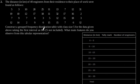Construct a grouped frequency distribution table with class size 5 for the data given above, taking the first interval as 0 to 5 (5 not included). What main features do you observe from this tabular representation?